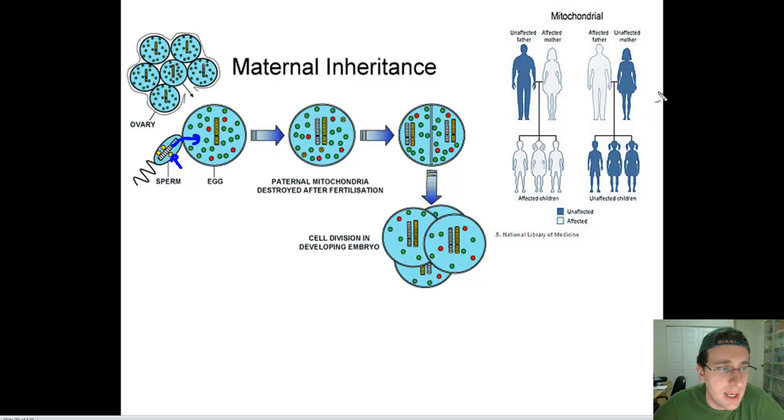Which means that if the mother has a disease in their mitochondria, all the children will have that disease as long as they inherit at least one mitochondria from the mother with the disease in it. And so that's kind of how it works.